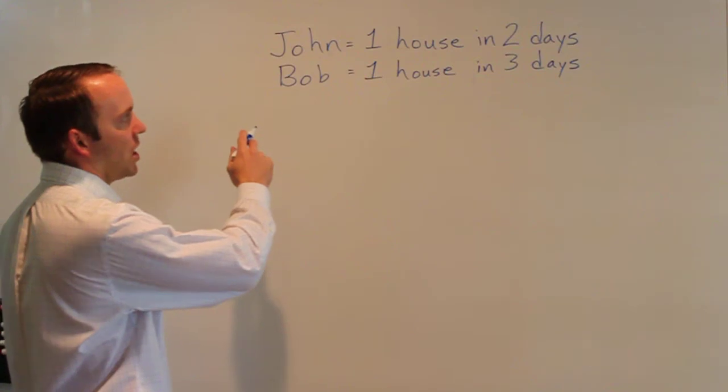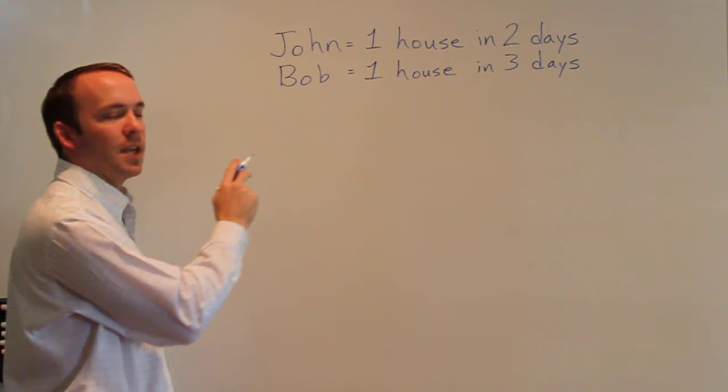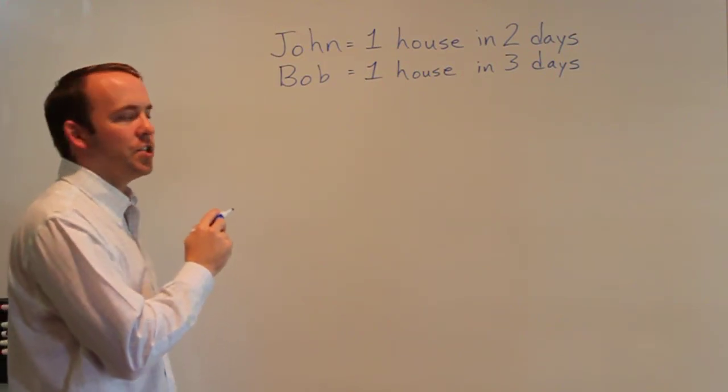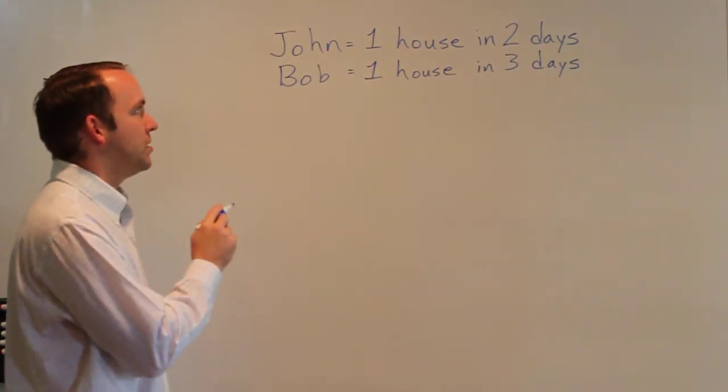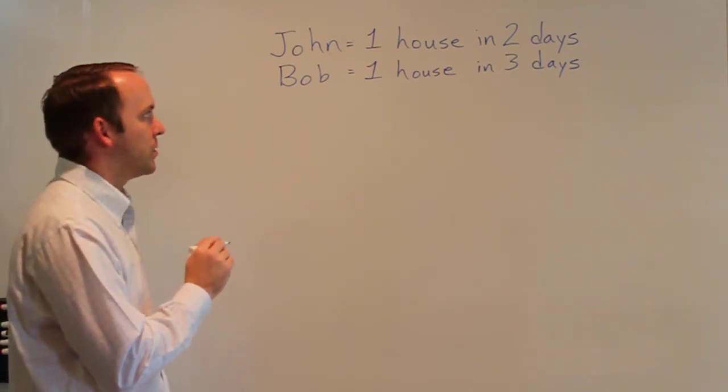Here we have John who can paint a house in two days and Bob who can paint a house in three days. The question asks how long would it take John and Bob if they work together to paint one house?